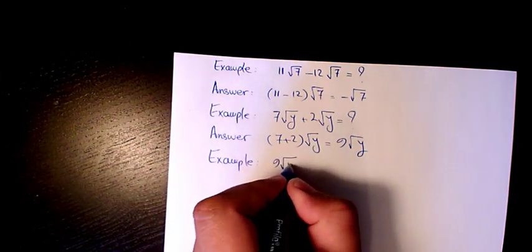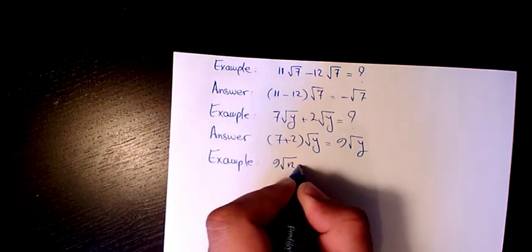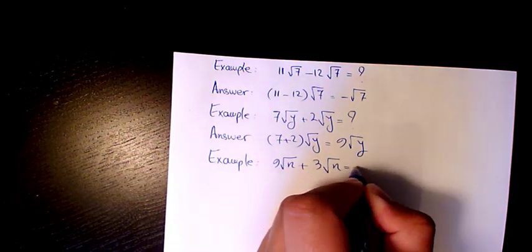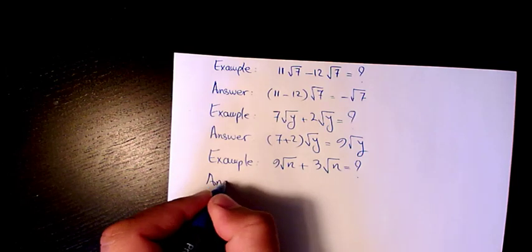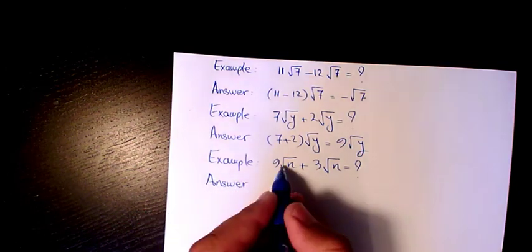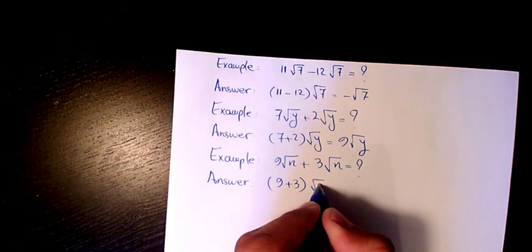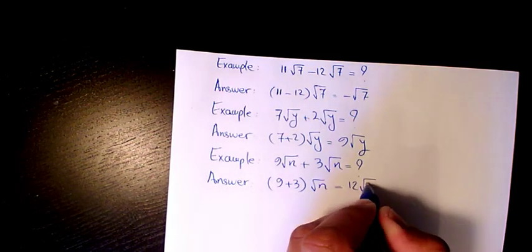9 root n plus 3 root n. The answer is 9 plus 3 root n, which is going to be 12 root n.